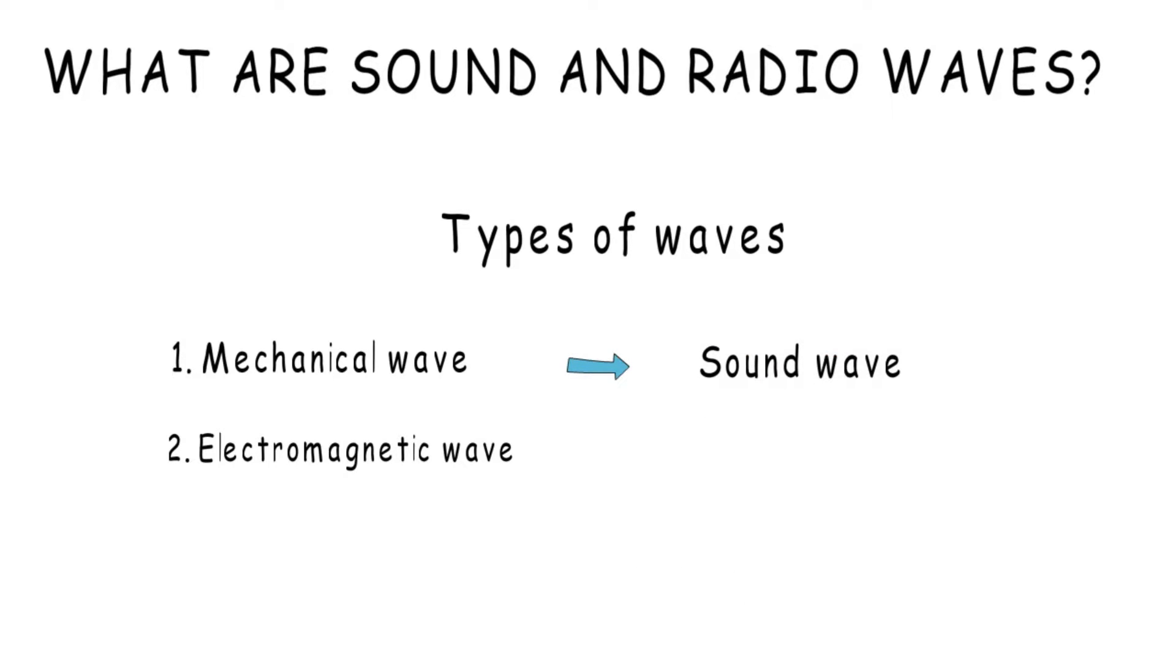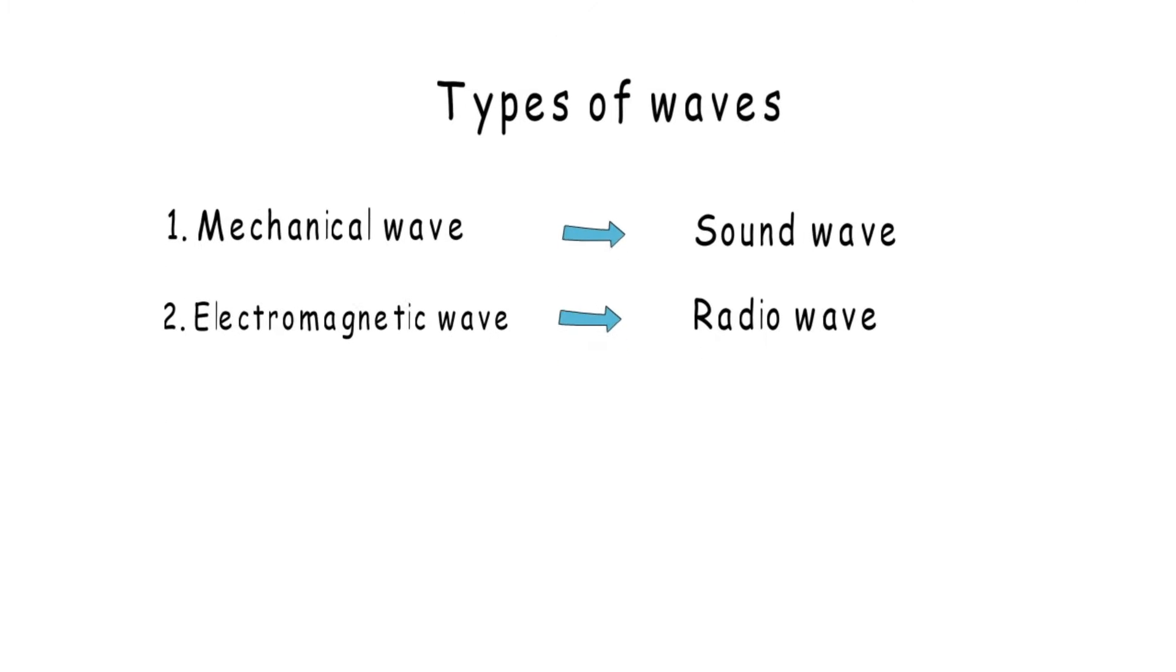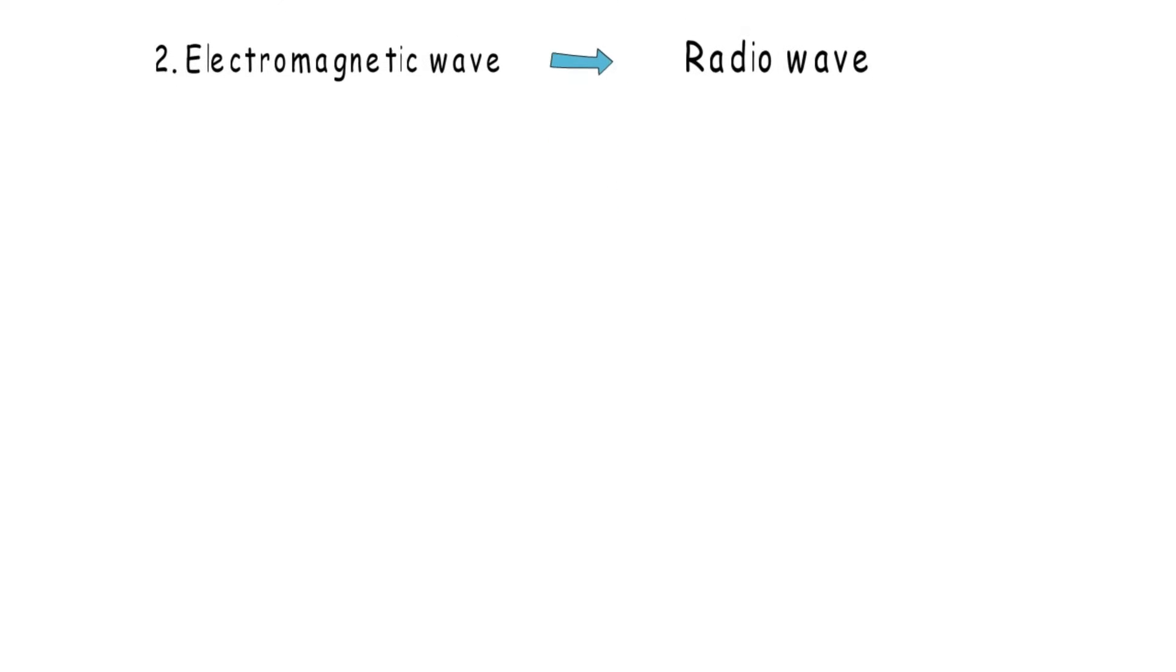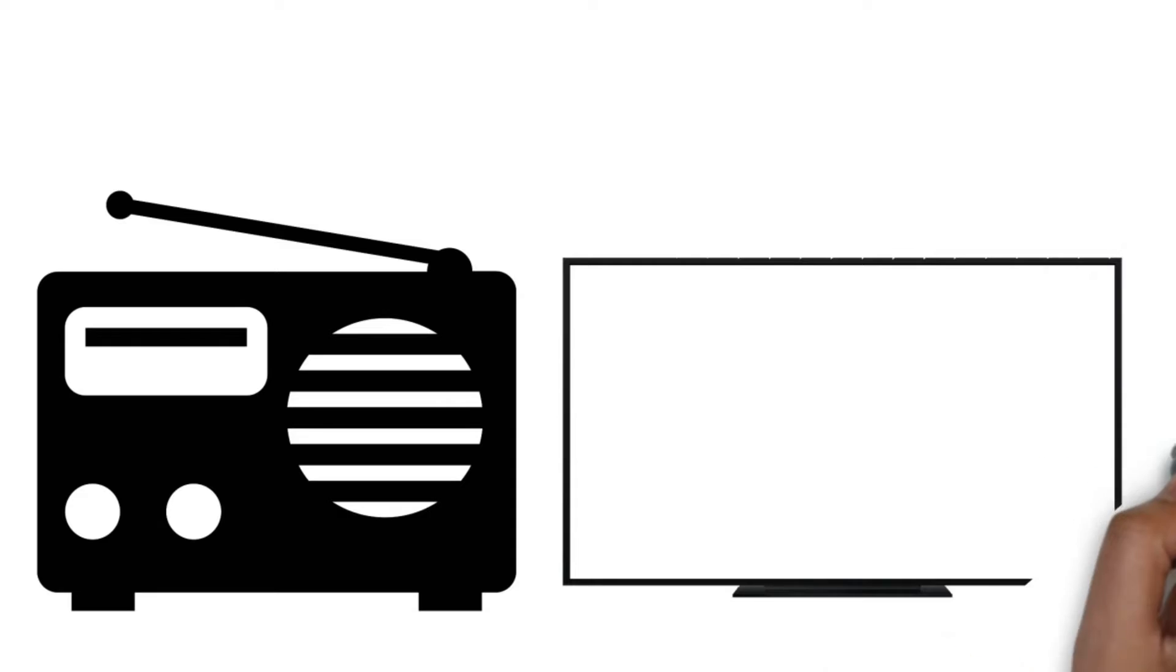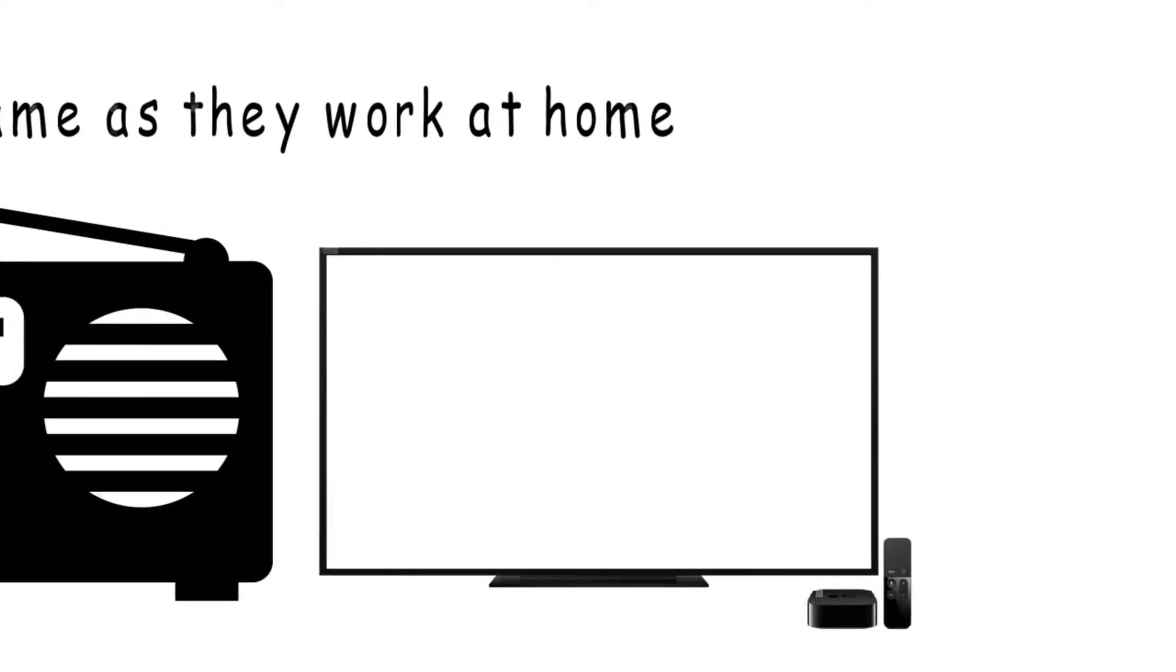Sound waves are a type of mechanical wave which cannot travel without a medium, whereas radio waves are a type of electromagnetic radiation which can travel when there is no medium. This is exactly the same as how your radio and television work at home.